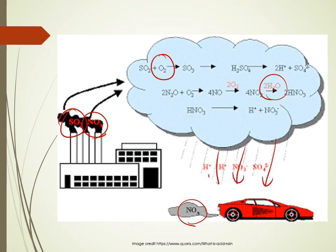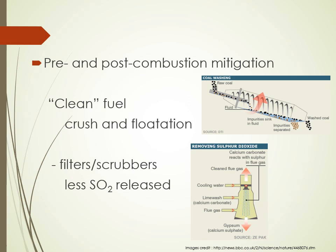These are released into the atmosphere, combine with oxygen, react with water, and we end up with acids that fall down to earth and cause lots of issues. So how can we deal with acid rain and prevent it? One option is pre-combustion — we can actually clean our fossil fuels before we burn them. An example is making clean coal: we crush the coal and put it through a machine.